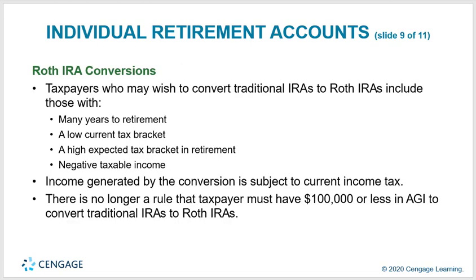Taxpayers may wish to convert a traditional IRA to a Roth IRA, including those with many years to retirement, a low current tax bracket, a high expected tax bracket in retirement, or negative taxable income. Income generated by the conversion is subject to current income tax. There is no longer a rule that taxpayers must have $100,000 or less in AGI to convert traditional IRAs to Roth IRAs.